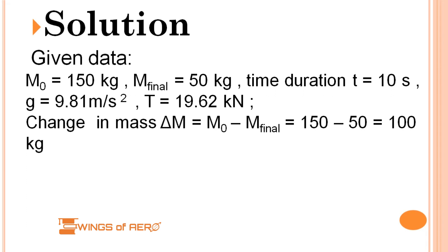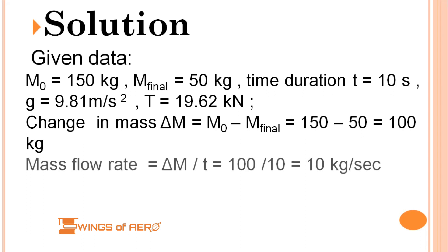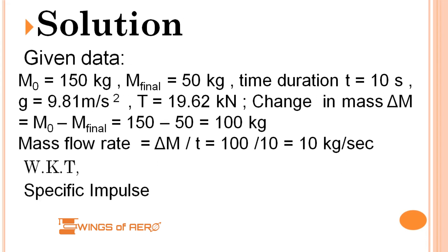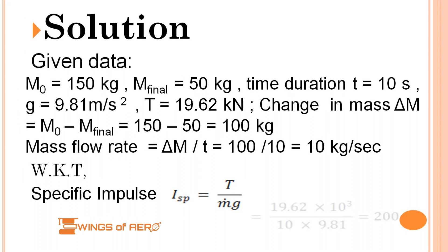Now let's find the mass flow rate. We know that change in mass divided by time gives the mass flow rate. Recalling the formula for specific impulse — thrust divided by mass flow rate times g — and substituting the values: 19.62 × 10³ N divided by mass flow rate of 10 kg/s divided by 9.81 m/s², we get 200 seconds.